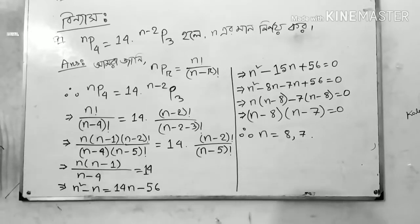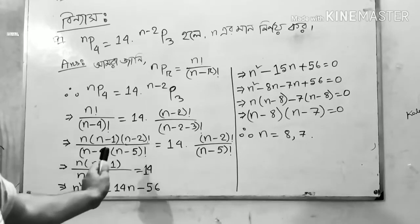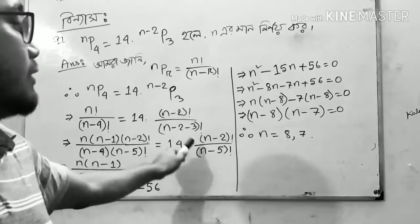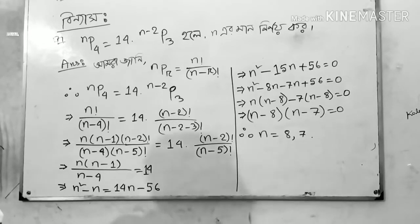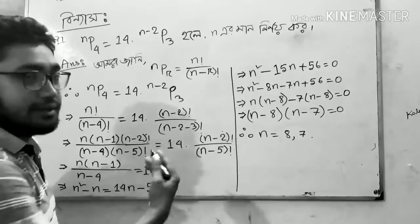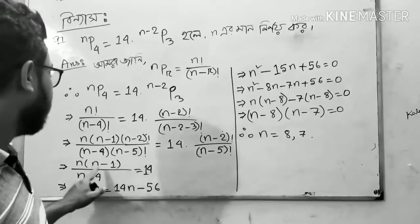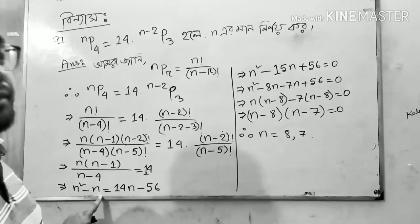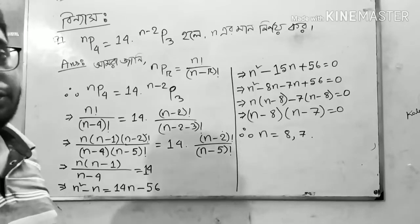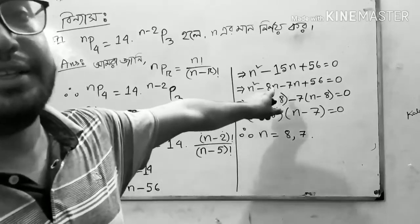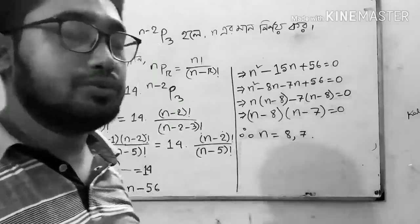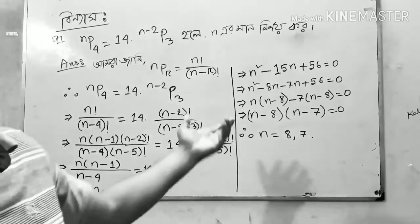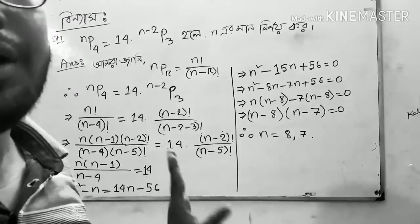We have to write the n factorial: n-1 and n-2 factorial and n-4 into n-5 factorial. n-5 and n-5, so n-2 equals the third one and n-1 equals the fifth one. N squared minus n plus 56 equals 0. Therefore, n is equal to 8 or 7.